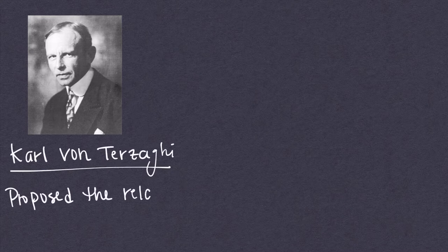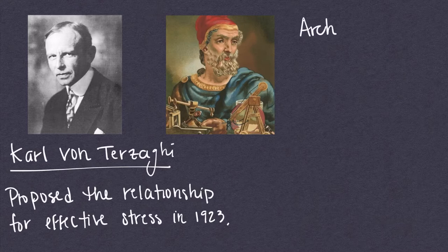Carl von Terzaghi was an Austrian engineer known as the father of geotechnical engineering who proposed the relationship for effective stress in 1923.